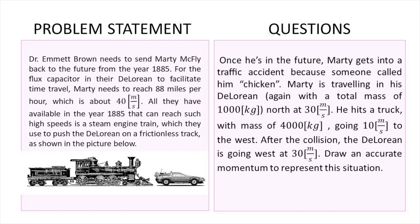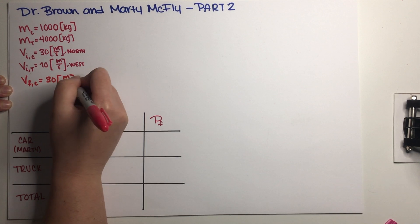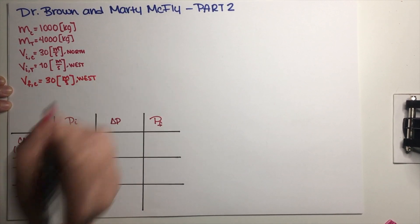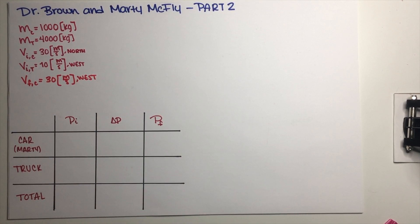So this is the problem statement right here. In part one, Martin McFly found a way to get into the future, so now he's in the future. Martin gets into a traffic accident because someone called him a chicken. He is initially traveling north at 30 meters per second and he hits a truck which was going west at 10 meters per second. After the collision, the DeLorean is going west at 30 meters per second. The exercise is to draw an accurate momentum chart to represent this problem.